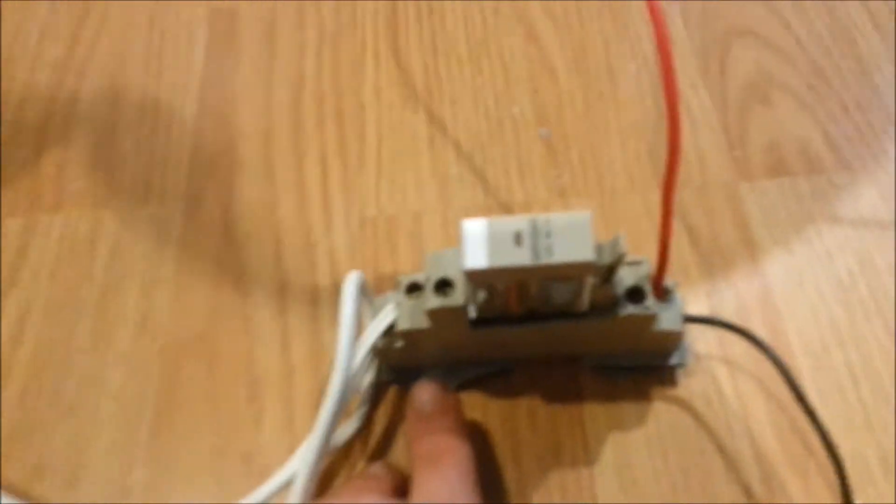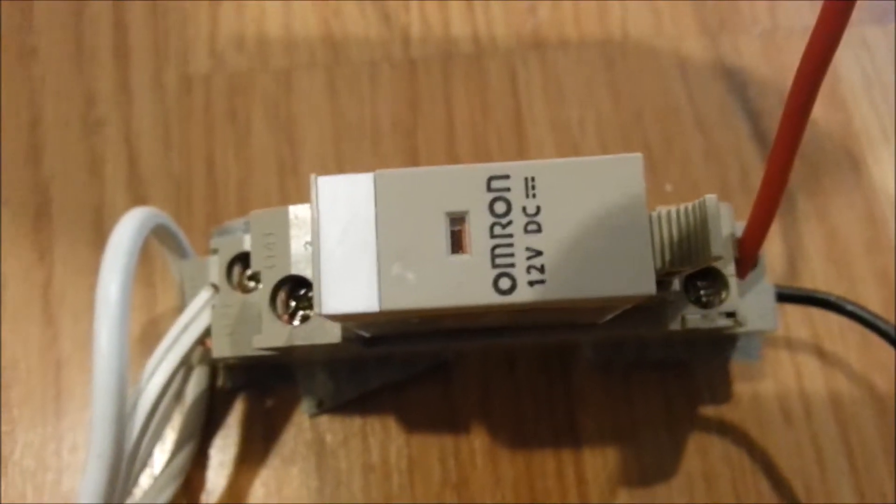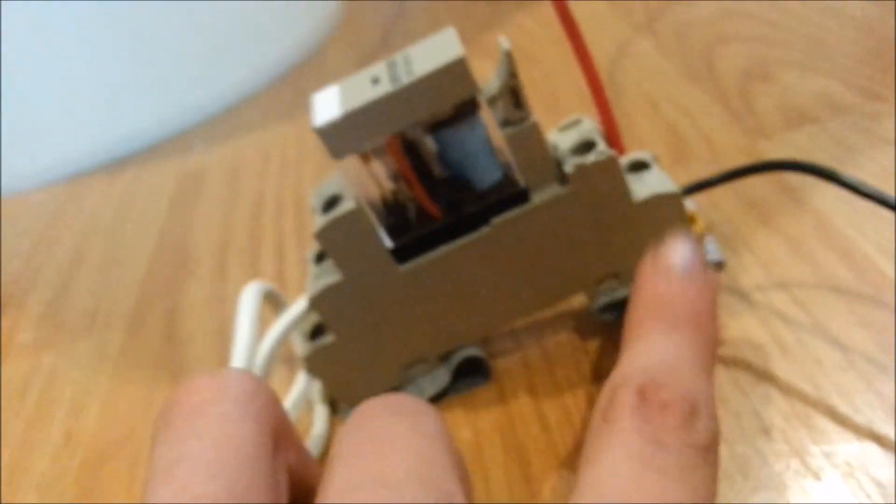When the magnet comes close to here and shuts that part off, that little red thing over there will actually switch to one side, I believe to the left, which will actually shut off the gate for electricity. As you see, 12 volts DC.